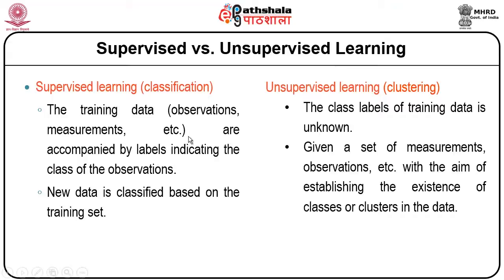In unsupervised learning, the class labels of the training data are totally unknown. The data can belong to a new category also. Given a set of measurements or observations, the aim is to establish the existence of classes. If there would have been a class, we might include that into a specific class or cluster in the data.